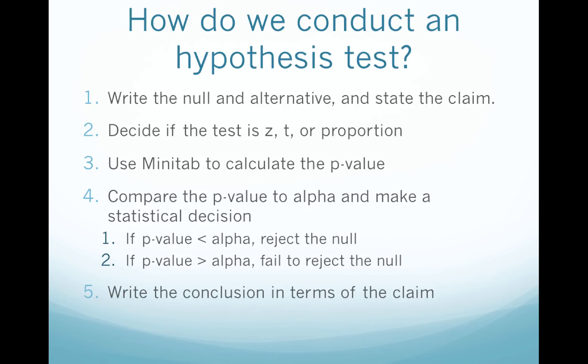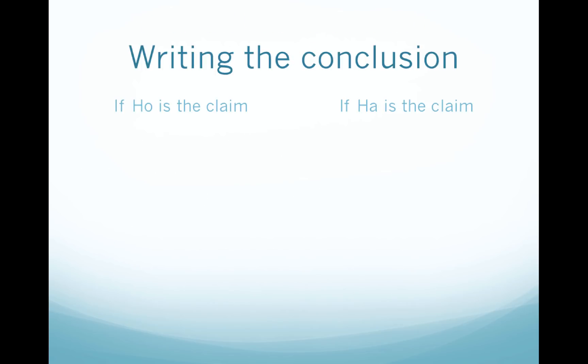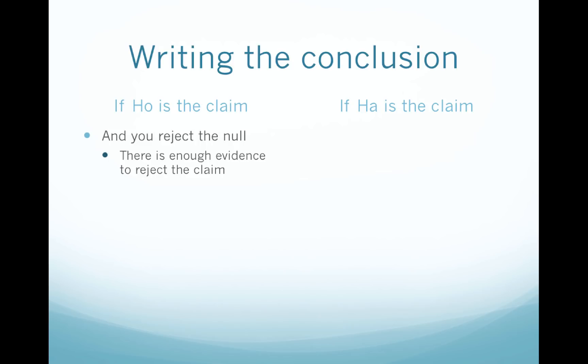The last step is to write the conclusion in terms of the claim. We have two options: either the null is the claim or the alternative is the claim. If the null is the claim and we reject the null, then essentially we're rejecting the claim, and we say there is enough evidence to reject the claim — then we state in the sentence what the claim is, which you'll see me do in examples in a few minutes.